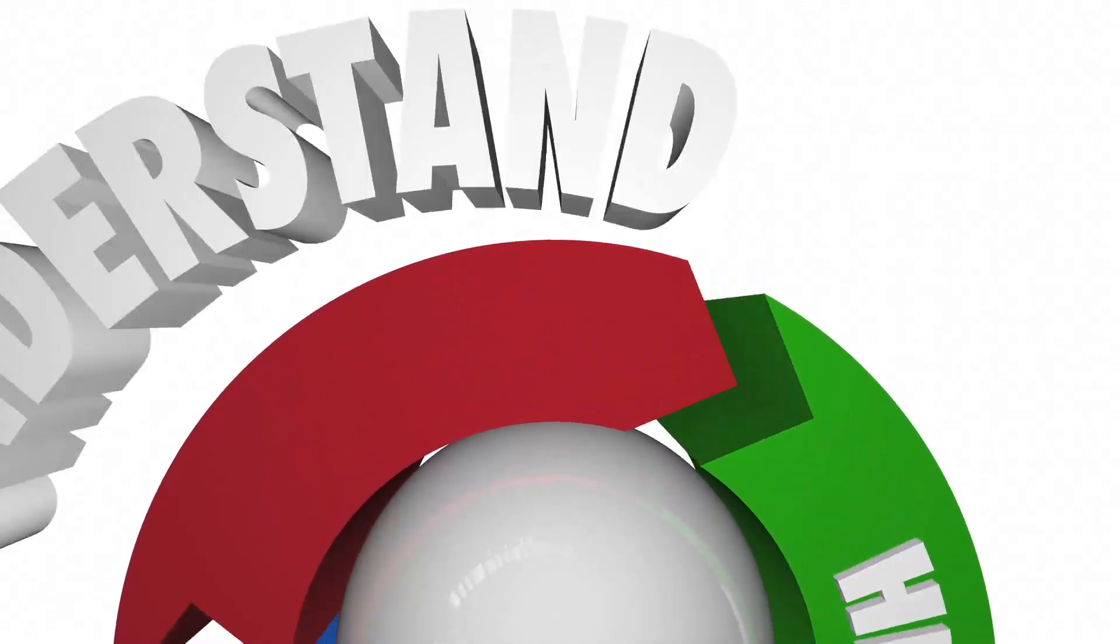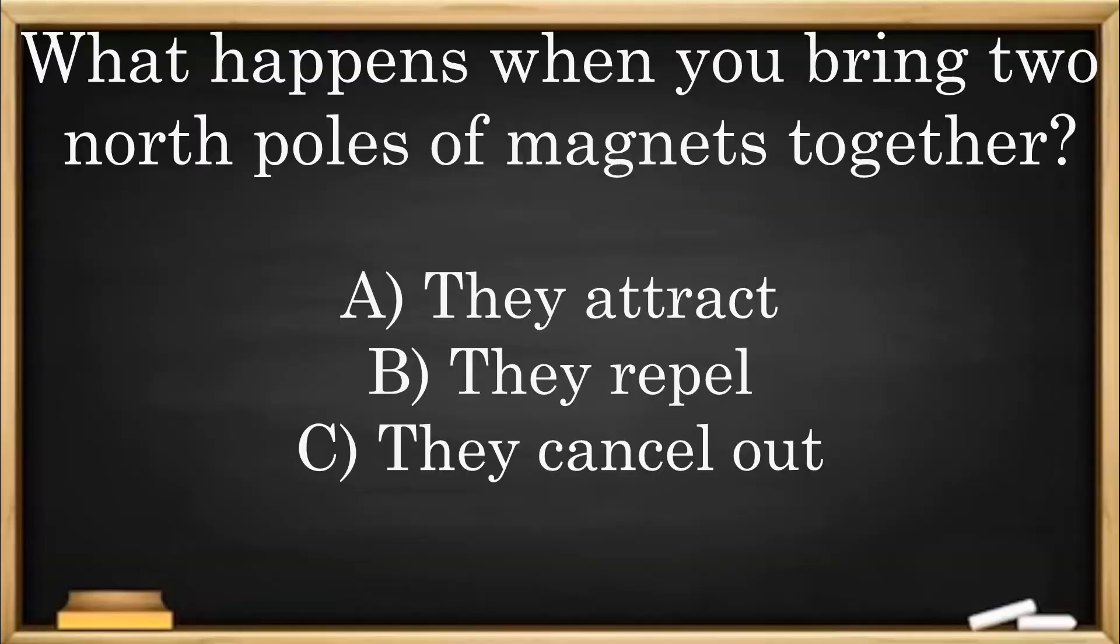Check for understanding. What happens when you bring two north poles of magnets together? A. They attract. B. They repel. C. They cancel out.